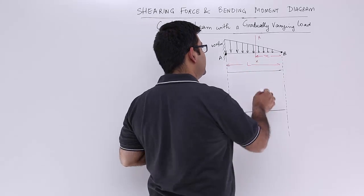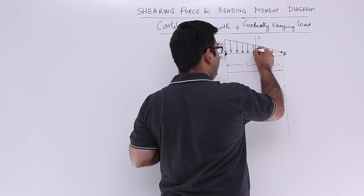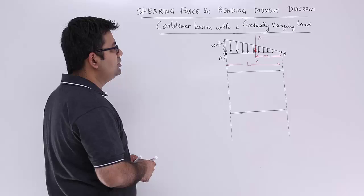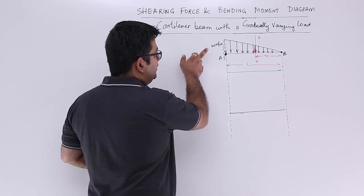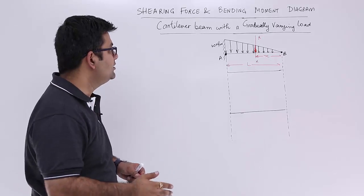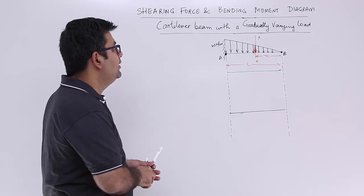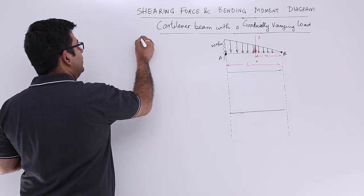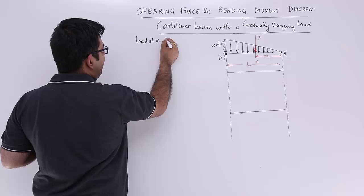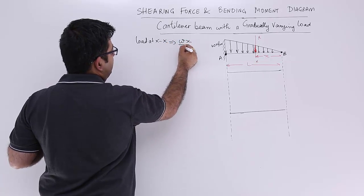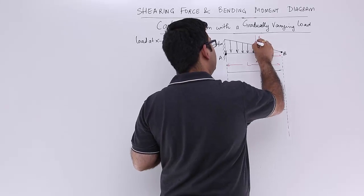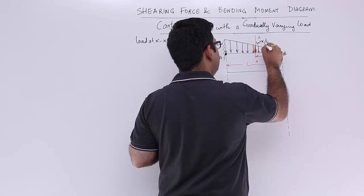What is the load at the section? So we have to find out the load over here. If you take these two triangles, this bigger triangle and this smaller triangle, they are both similar triangles. So by the rule of similarity, the load at XX is W into X upon L. So this load over here is WX by L.